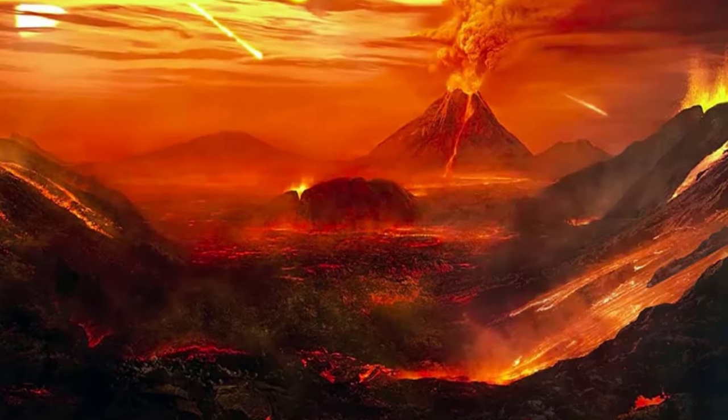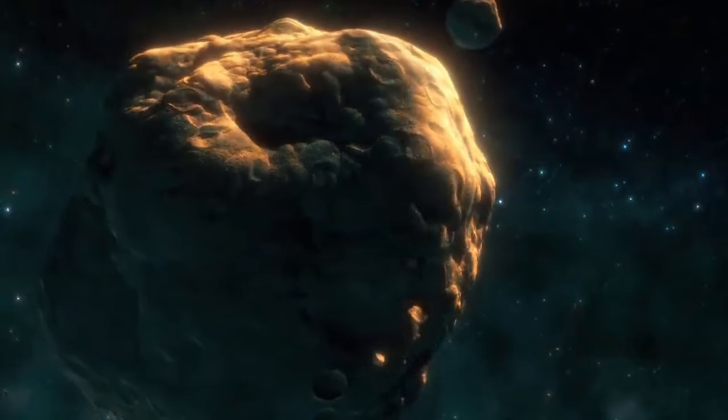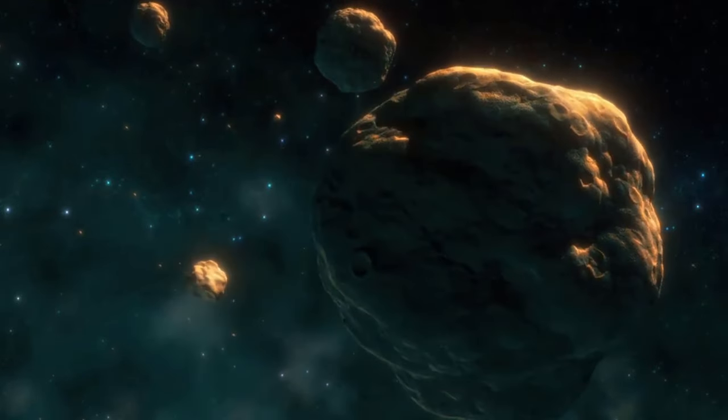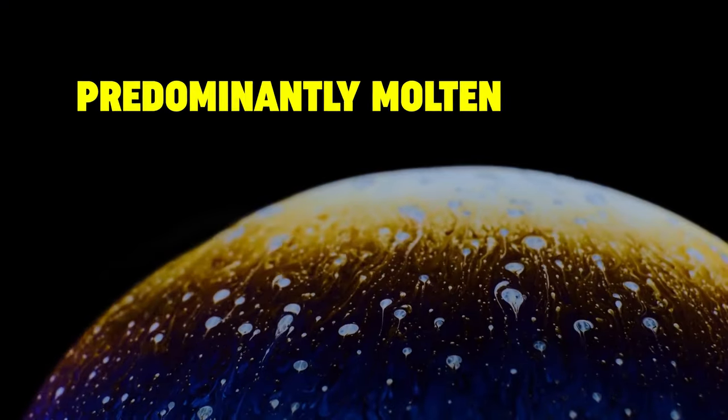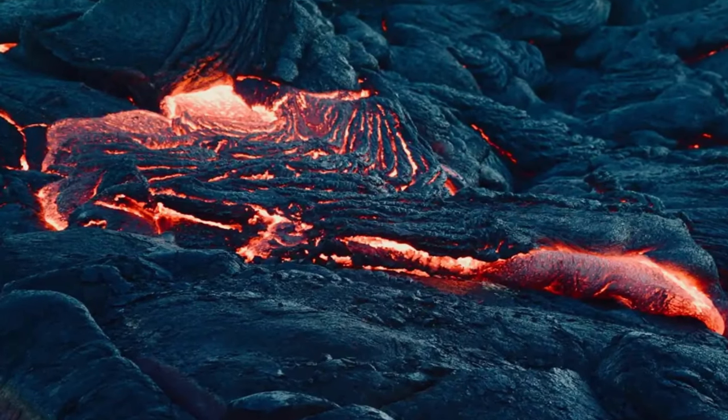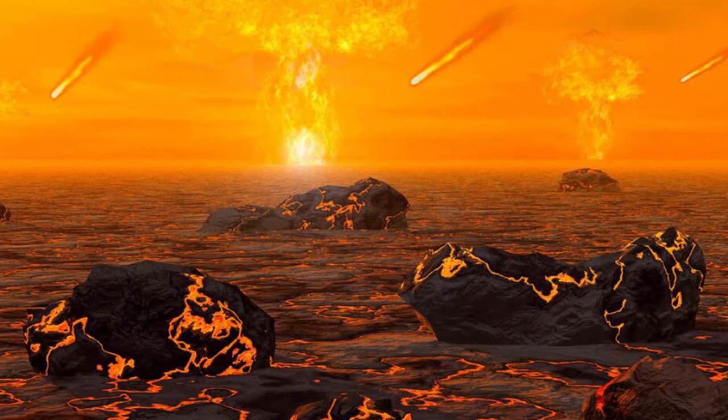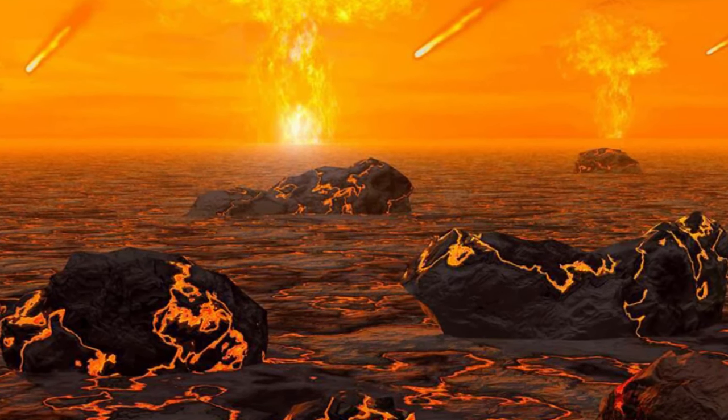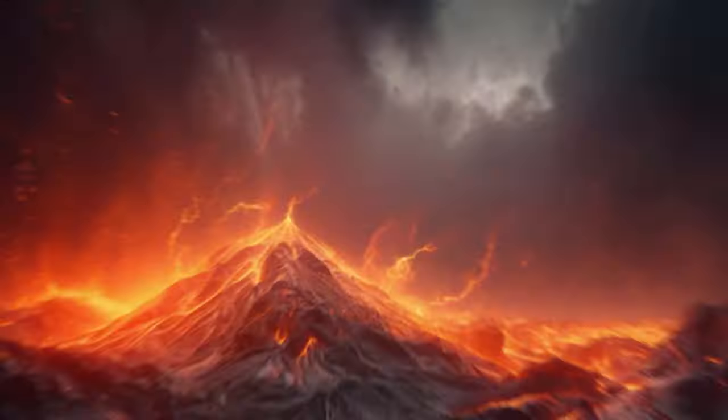The surface was predominantly molten, with vast oceans of magma covering the landscape, a result of the immense heat generated from the frequent and violent collisions that marked Earth's early accretion period.